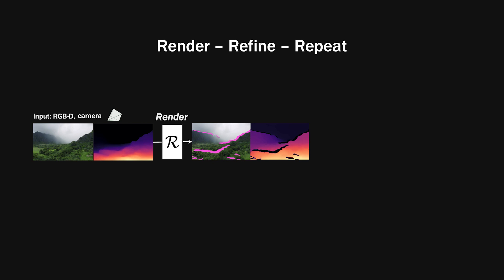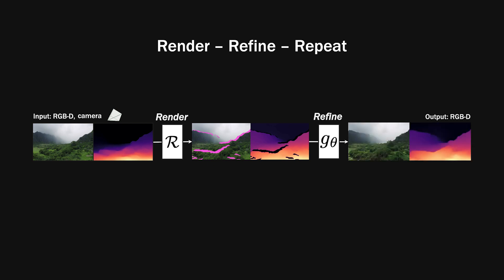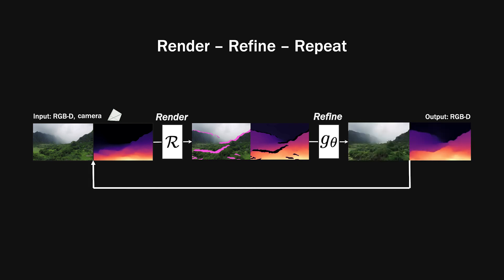We then refine the rendered image with a deep network, whose task is to synthesise new content in missing regions and add detail to existing regions. We refine both the appearance and the geometry so that we can repeat this process in an autoregressive framework.